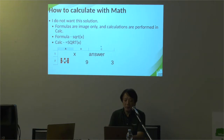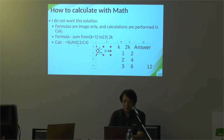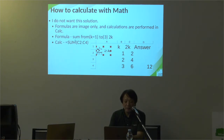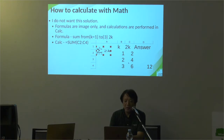For example, the formula square root of x is almost the same as the Calc command SQRT(x). Next is sigma — same as this one, just image only, just an object. And the calculation is done in Calc. The formula is: sum from k equals 1 to 3 of 2k. Calc just uses SUM. But I don't want this solution.